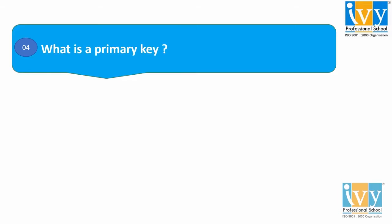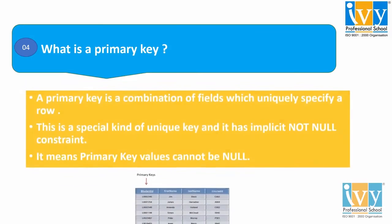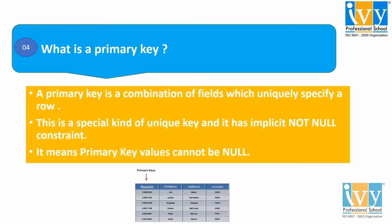Moving to our fourth question: what is a primary key? This is a very common term that we hear in SQL. A primary key is a field in a table which uniquely identifies each record in the database table — that is, it is a combination of fields which uniquely specifies a row. It is a special kind of unique key and it has an implicit non-null constraint. A primary key cannot have a null value.